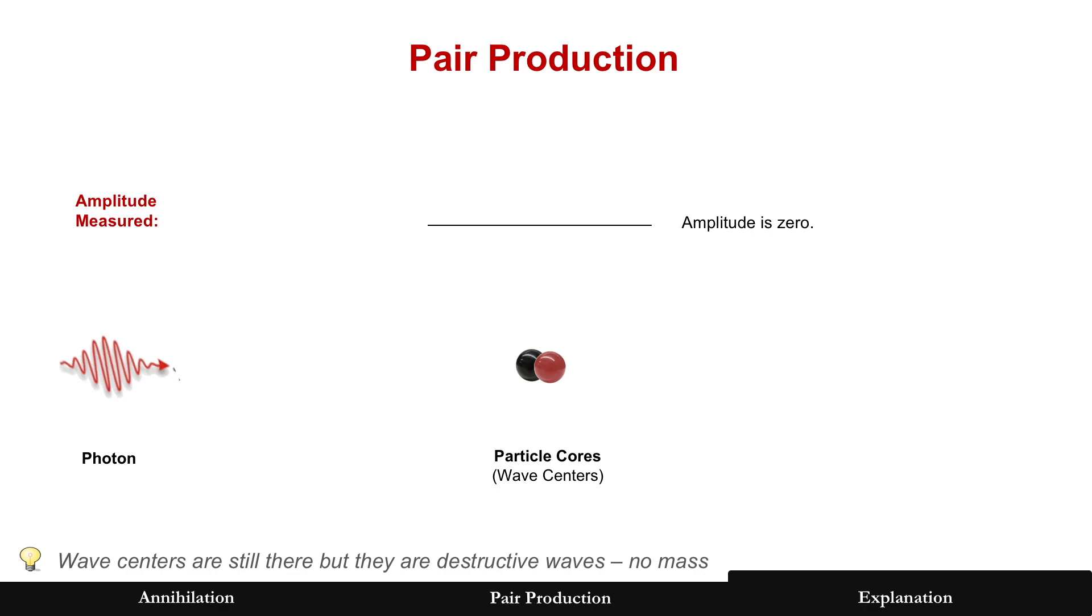Now this has to be a really high energy photon, because it has to have enough kinetic energy to separate these particles. And so it takes a gamma ray photon. Now amplitude is still zero until this happens.